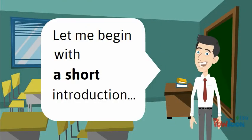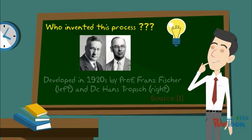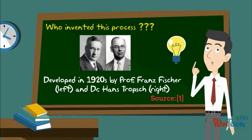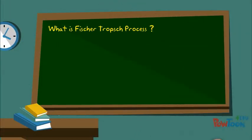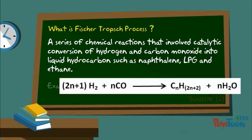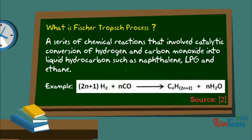Let me begin with a short introduction. Who invented this process? It was developed in the 1920s by Professor Franz Fischer and Dr. Hans Tropsch. The Fischer-Tropsch process is a series of chemical reactions involving the catalytic conversion of hydrogen and carbon monoxide into liquid hydrocarbons such as naphtha, LPG, and ethane.